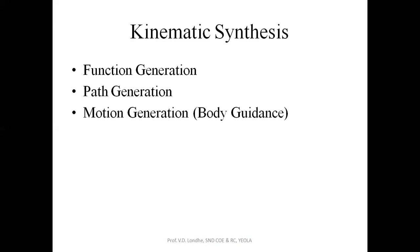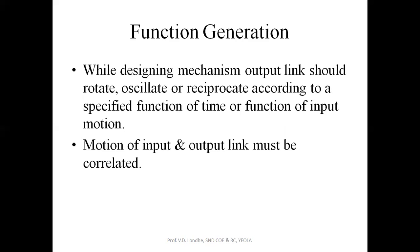In function generation, the output link should rotate, oscillate, or reciprocate according to a specified function of time or input motion. The motion of the input and output links must be correlated. For example, in a four-bar chain mechanism, if the input link has some value x, then the output rocker link should be correlated with that x value — that is, y = f(x).